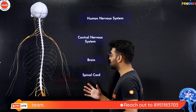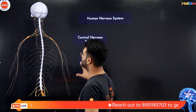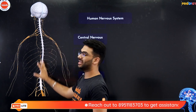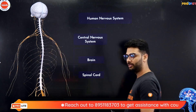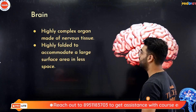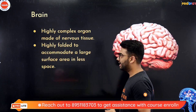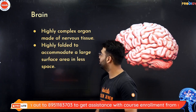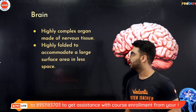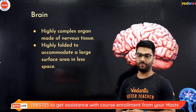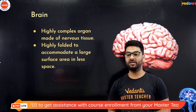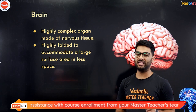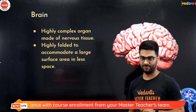The human central nervous system consists of the brain and the spinal cord. When we talk about the brain, it is a very complex organ made of nervous tissue, highly foldable to accommodate a large surface area in less space.